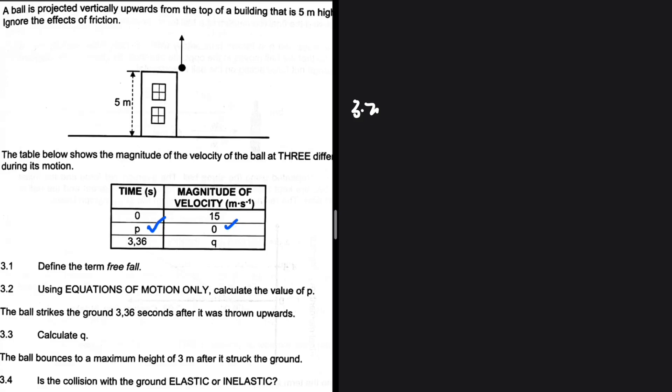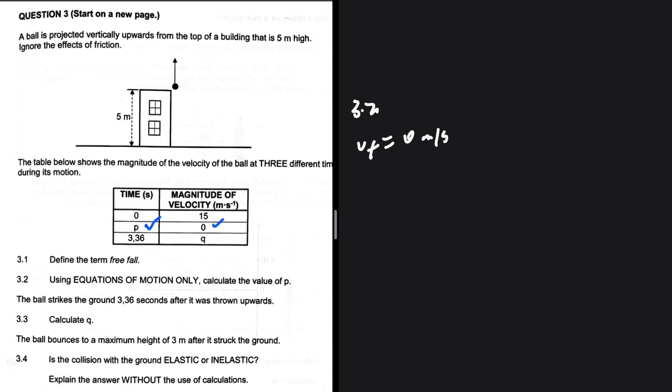Just like I've demonstrated in my course, take a look at this. We have vf which equals zero meters per second at the maximum height. If we're taking that as the final part of our motion, the initial velocity at t equals zero is 15 meters per second upwards. So p is delta t, which we are looking for. Obviously, we have the acceleration.